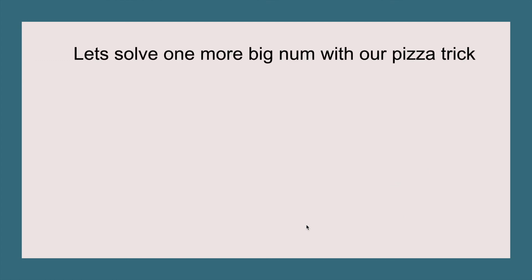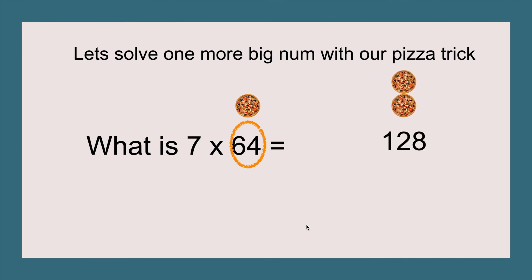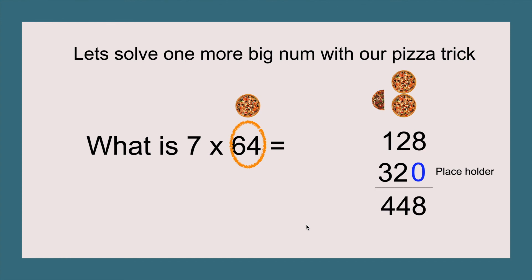Let's solve one more big number — this is going to be our last one. What is seven times sixty-four? Circle sixty-four. Sixty-four times two equals one hundred and twenty-eight. Add a placeholder zero. The half of sixty-four is thirty-two, so placing that next to the placeholder gives us three hundred and twenty. One hundred twenty-eight plus three hundred twenty equals four hundred forty-eight, so seven times sixty-four equals 448.